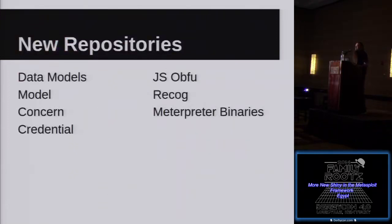We've also added a bunch of new repositories. The main ones on the left — data models, model concern, credential — are typically for the database layer of Metasploit, extracted so you can see it all in one place. JSObFoo is brand new as of last week, and we'll talk about that more in a minute. Recog, which we'll also talk about briefly. And Meterpreter binaries, which is a quick way for us to put binaries out there for the framework to use without committing 8 megs of binary data every time we want to change Meterpreter.